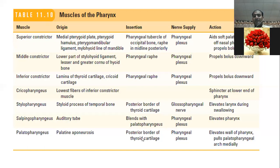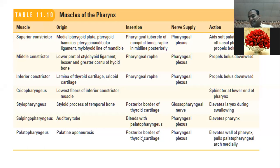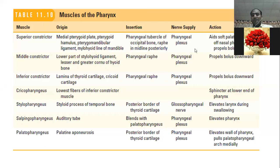Stylopharyngeus elevates the larynx during swallowing, and its nerve is the glossopharyngeal nerve — the 9th cranial nerve. When we eat food, the larynx connects to the respiratory system. During swallowing, we need to protect the respiratory system, so the larynx must be elevated.